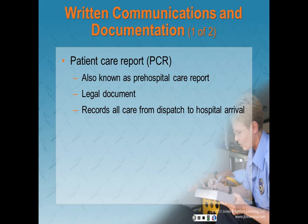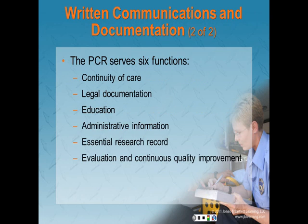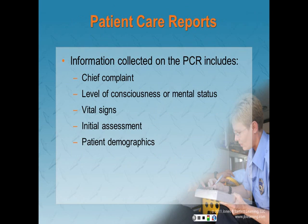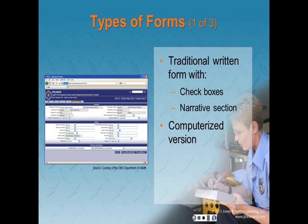As we move into written communications and documentation, the common term for our written report is a patient care report, or PCR — also known as a pre-hospital care report. It is a legal document and it records all care from dispatch to hospital arrival. It serves six different functions: continuity of care, legal documentation, education, administrative information, essential research, and evaluation and continuous quality improvement. The following information is always included on our PCR and is collected for data: the patient's chief complaint, their level of consciousness or mental status, their vital signs, your initial assessment, and patient demographics such as age, gender, and ethnic background. A lot of administrative information for use in billing, research, and quality improvement can be gathered from the PCR.